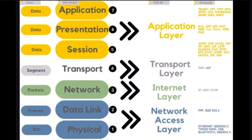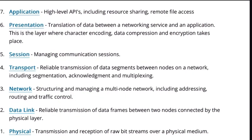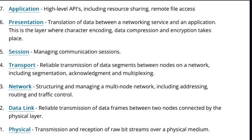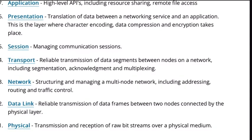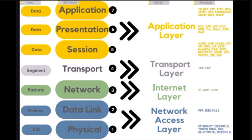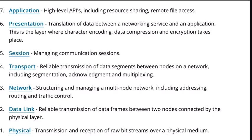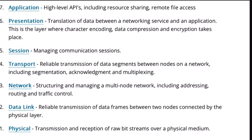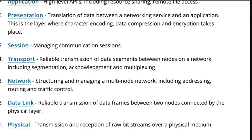Number five, the session layer. This establishes, maintains, and terminates connections between applications. It manages sessions, allowing data exchange between applications on different devices. Number six, the presentation layer. It translates data between the application layer and the lower layers. It deals with data formatting, encryption, and compression, ensuring that data is presented in a readable format. Number seven, the application layer, which provides network services directly to end users or applications. It includes network-aware applications and application-level protocols like HTTP, SMTP, and FTP. The OSI model serves as a reference framework, allowing different communication protocols to be compared and integrated into network systems.